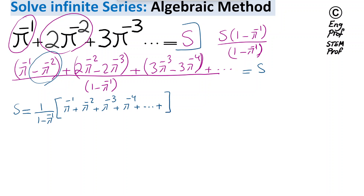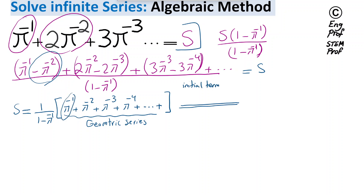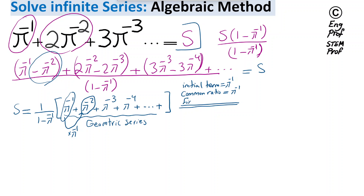Our infinite series is now in the form of a geometric series. In this geometric series, the initial term equals π to the negative 1, and the common ratio — what we multiply each term by to get the next — is also π to the negative 1. Since the terms are in the form of 1 over π to the power n, as n goes to infinity the denominator goes to infinity and the whole term goes to zero, so the final term effectively approaches zero.